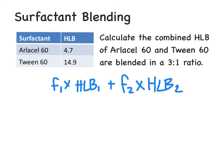Arlacel 60 is present in a 3 to 1 ratio, so 3 out of 4 parts is equal to a fraction of 0.75. We can multiply that by the HLB value of 4.7, which gives us a value of 3.525.